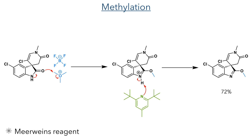With this in hand, they then methylated the carbonyl oxygen of the 5-membered lactam. This was done using Meerwein's salt, which is a very reactive electrophilic methylating reagent. This is attacked by a lone pair on the carbonyl oxygen, and the cation is stabilised by electron density from the nitrogen atom. The cationic intermediate is then deprotonated by 2,6-di-tert-butyl-4-methylpyridine, forming the product in a 72% yield.